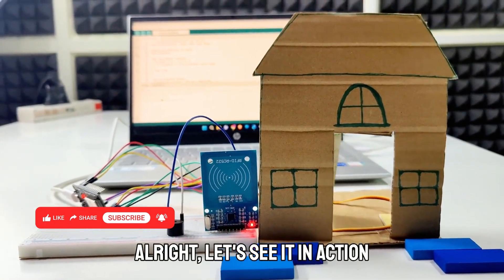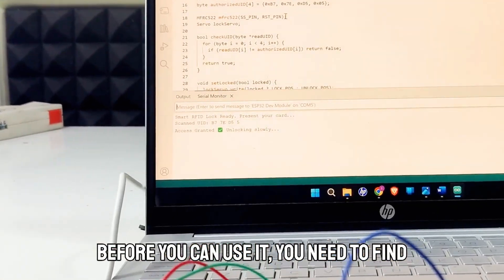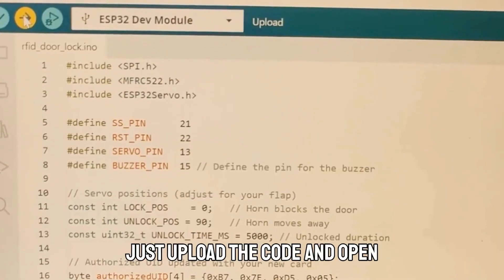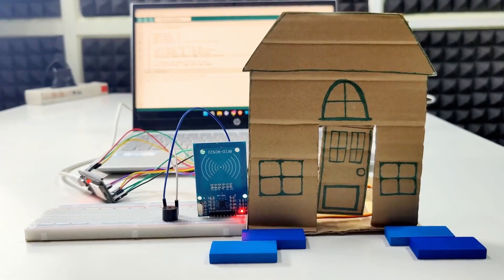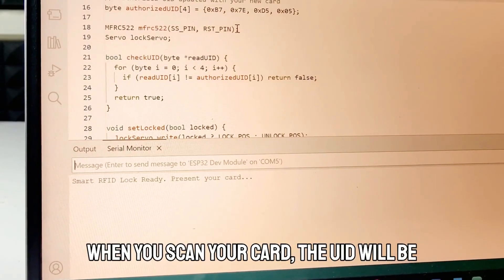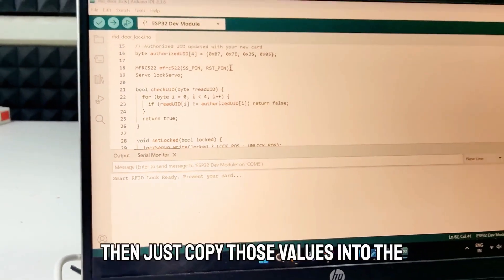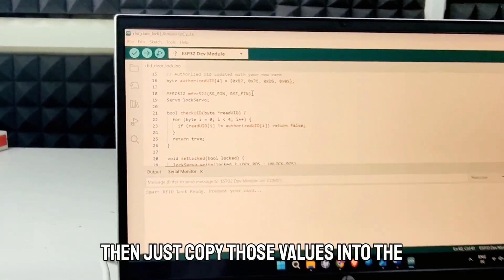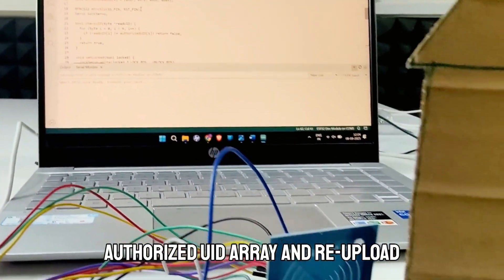Alright, let's see it in action. Before you can use it, you need to find your card's UID. Just upload the code and open the serial monitor. When you scan your card, the UID will be printed right here. Then just copy those values into the authorized UID array and re-upload.